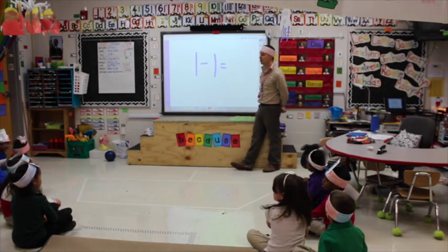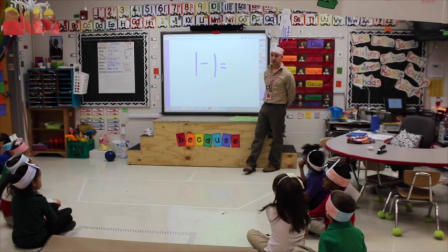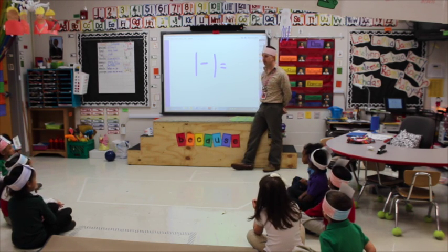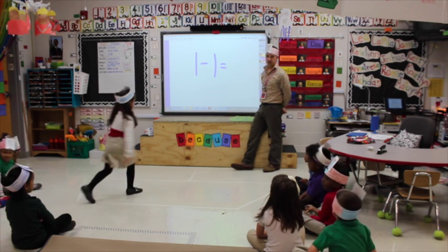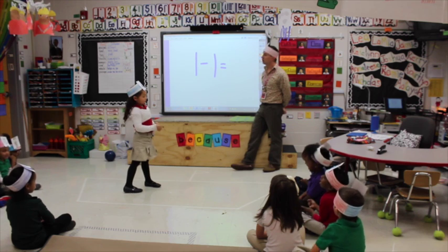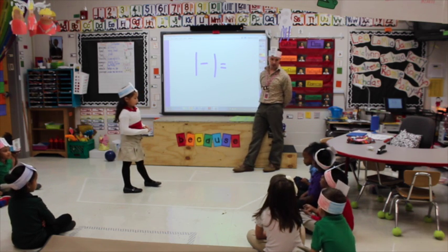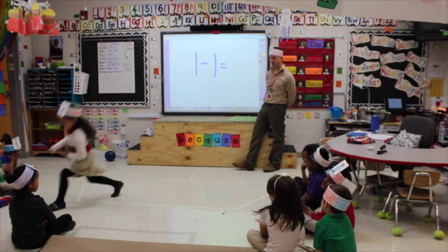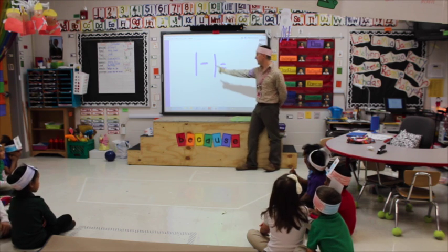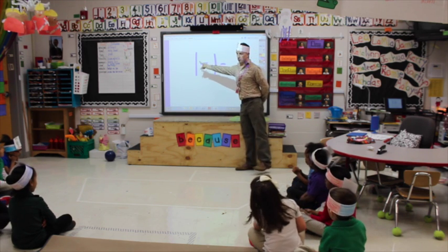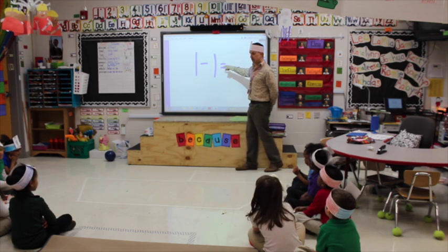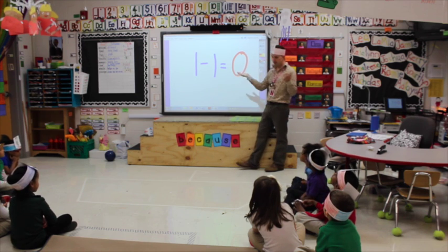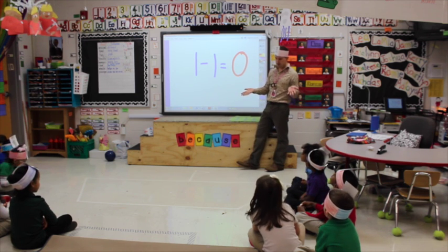One minus one equals... So how many people are going to get on my boat? One. Come on, Leah. Courtland, how many people are going to get off my boat? One. Courtland, how many are left? Zero. One minus one equals zero.